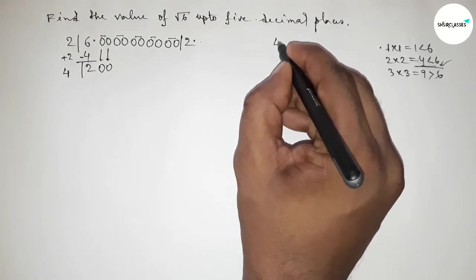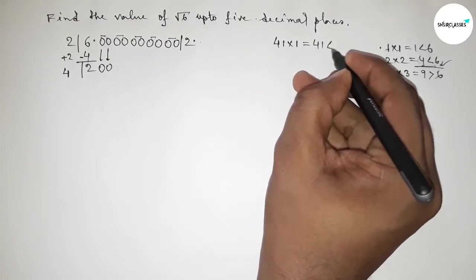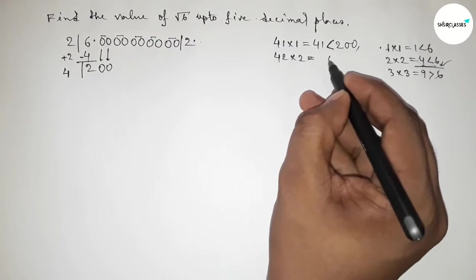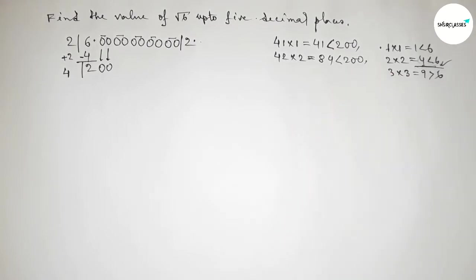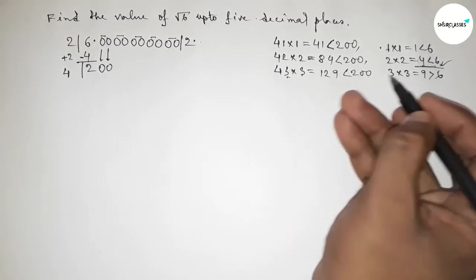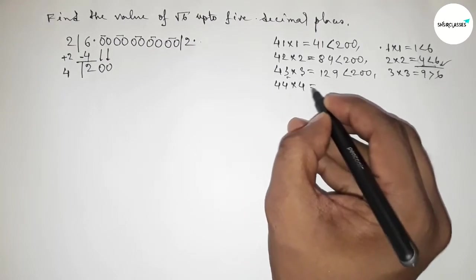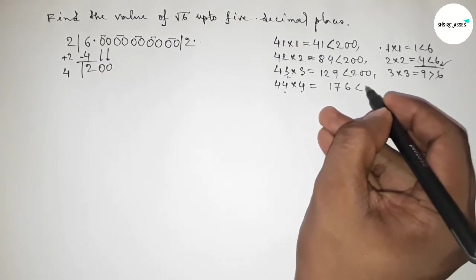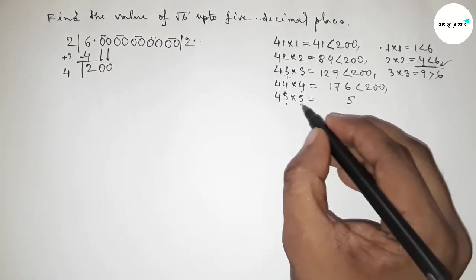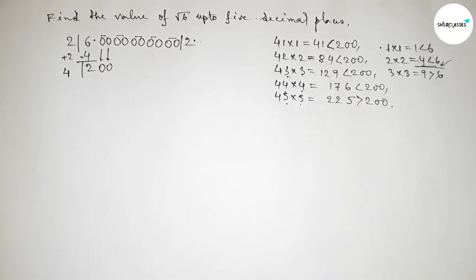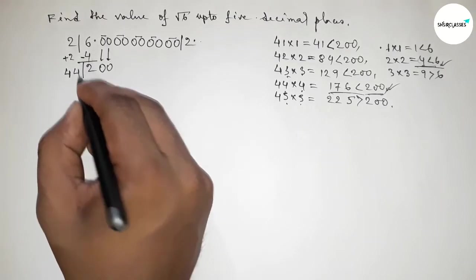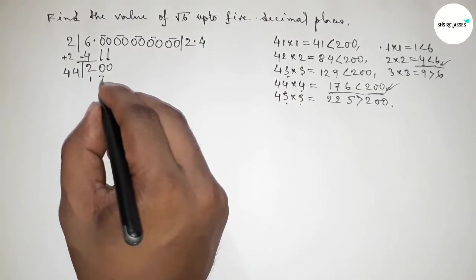Taking 1: less than 200. Taking 2: 42×2=84, less than 200 but not close. Taking 3: 43×3=129, less than 200. Taking 4: 44×4=176, less than 200. Taking 5 would give 22×something greater than 200. So we take 4 since 176 is almost near and less than 200. Write down 176.